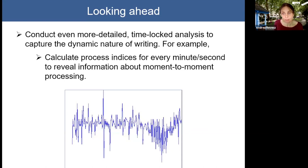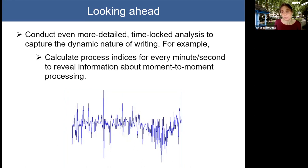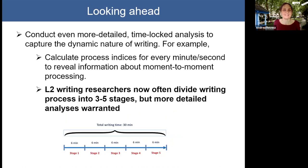Future research would also benefit from even more detailed time-locked analyses of the process data. For example, we could calculate eye-tracking indices or keystroke logging indices for every minute or even every second of the writing task, revealing information about processing on a moment-to-moment basis. This is important given the dynamic nature of writing performance. We have started making steps in this direction by dividing the writing process into five stages, but more detailed analyses are warranted.